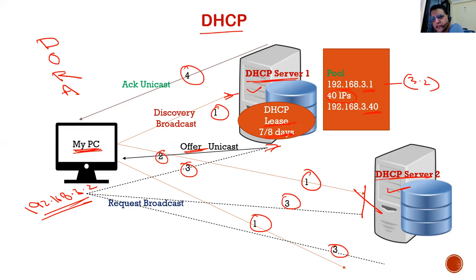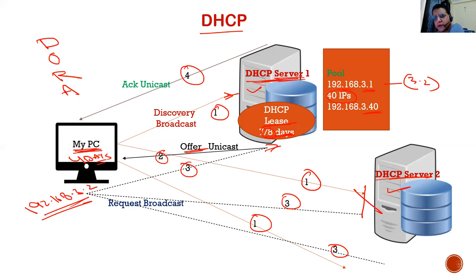We can change the lease duration. Once half the lease expires — say after four days of an eight-day lease — my system will repeat the same process again. If I had only shut down my computer for a few hours, I might get the same IP back. When I request again, the server checks if that IP is still available. If yes, it gives the same IP; otherwise, it assigns a different one.